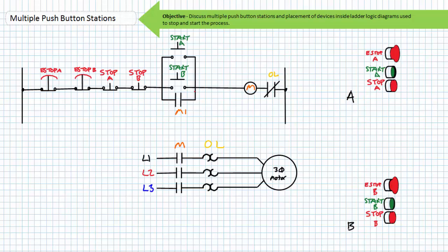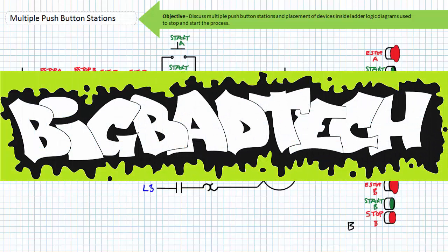Alright, this about wraps up this brief lecture on multiple push-button stations. In conclusion, this lecture examined the incorporation of multiple push-button stations used to control a process. We discussed the safety chain and the placement of devices intended to stop and start the process. Remember to review these concepts as often as you need to really drive it home — imagine how well lab will go if you know what you're doing. Thank you very much for your attention and interest, and we'll see you again during the next lecture of our series. Remember to tell your lab partner about this resource and be sure to check out the Big Bad Tech channel for additional resources and updates.